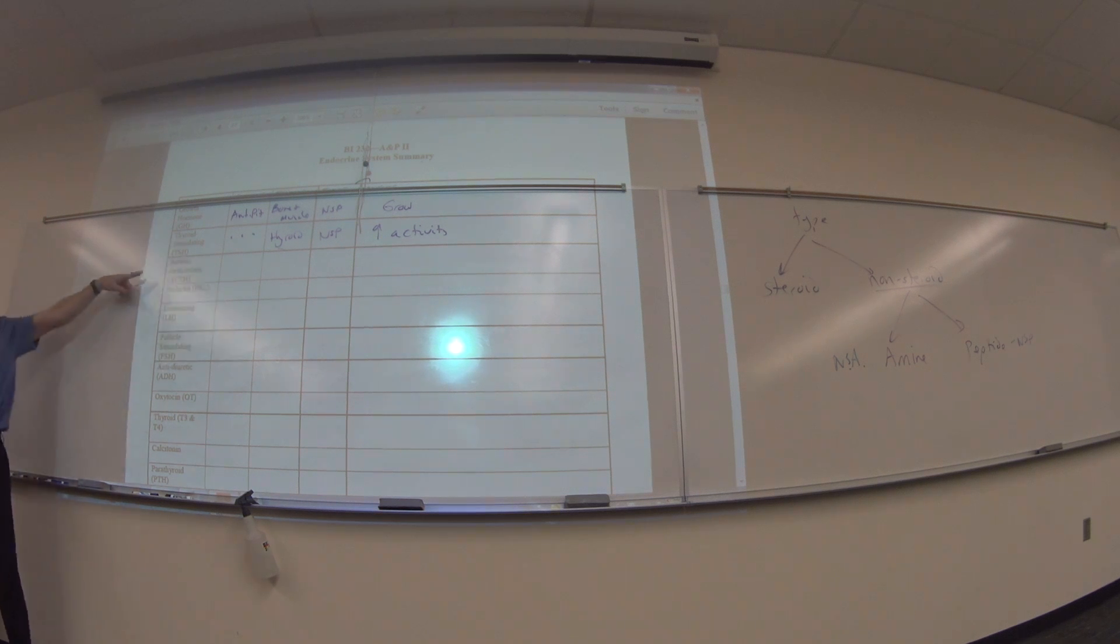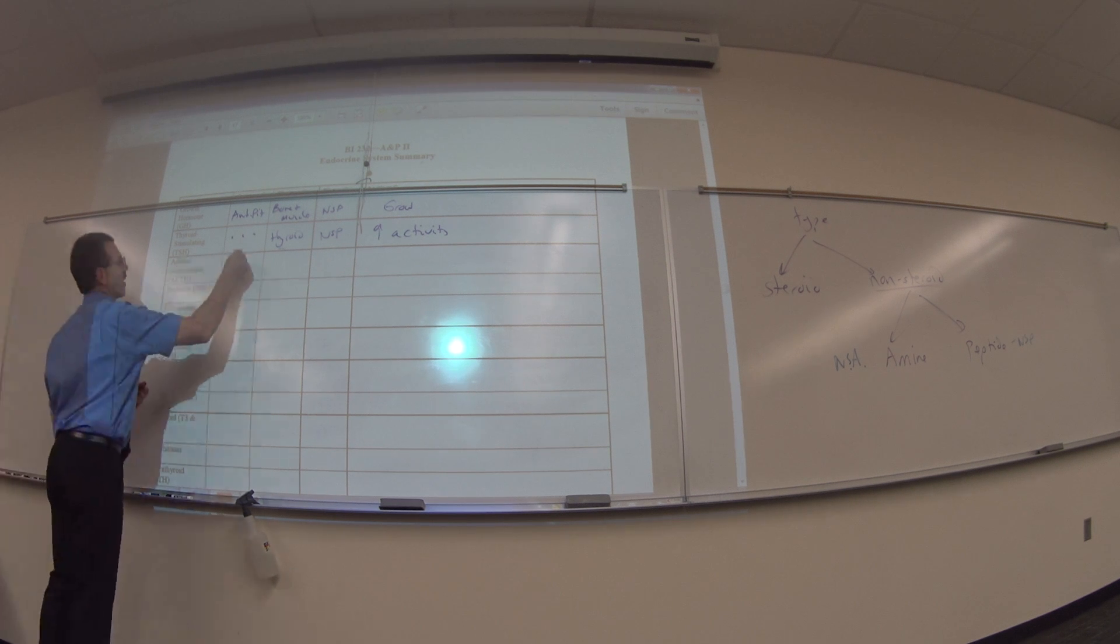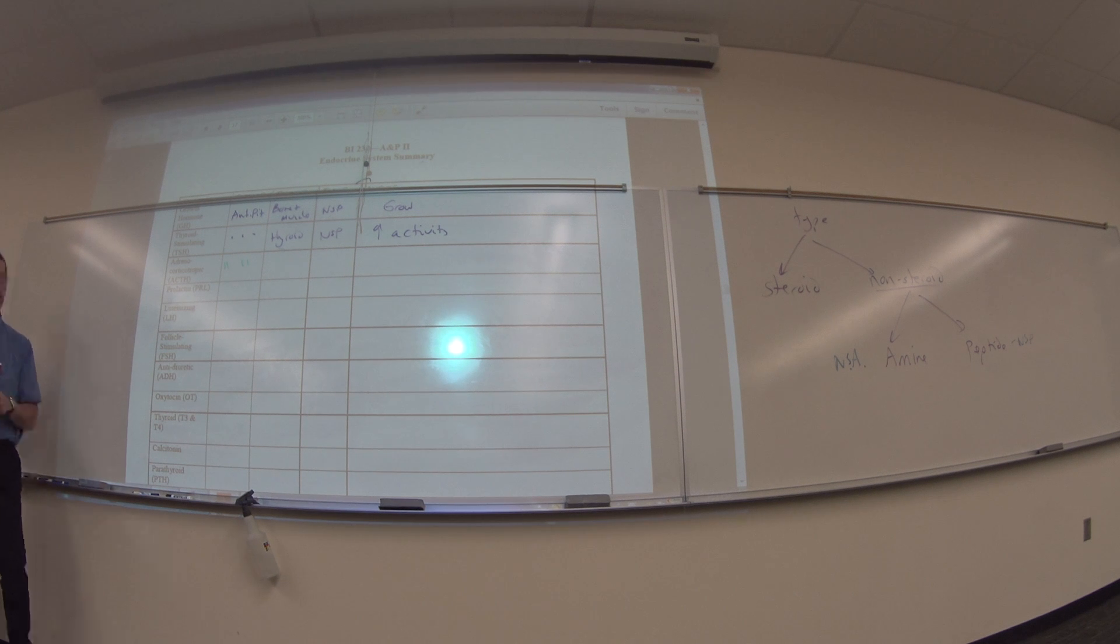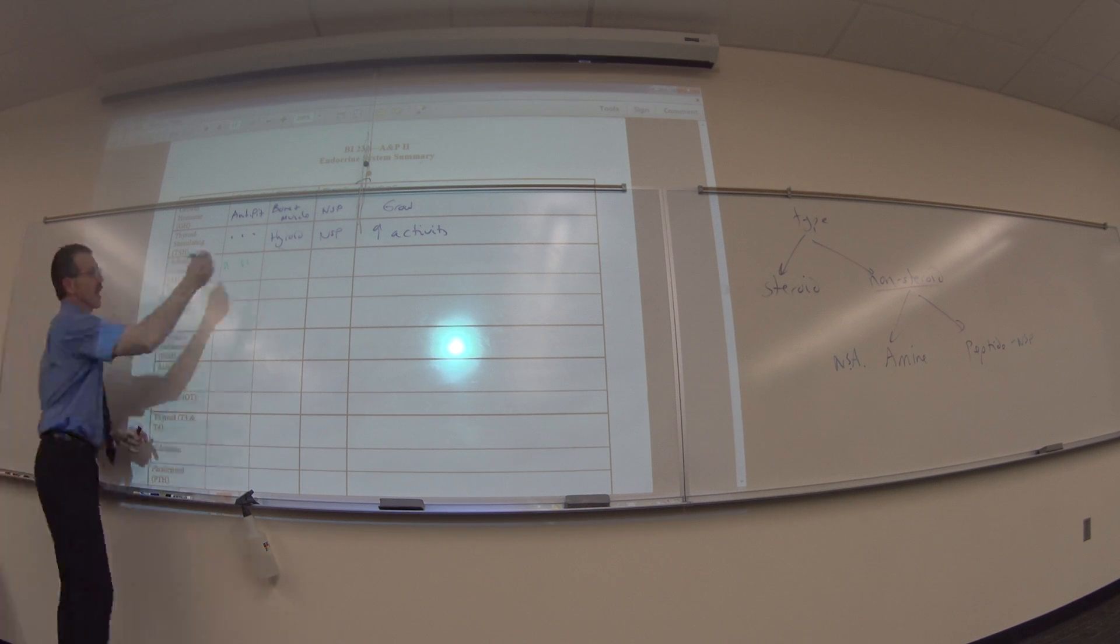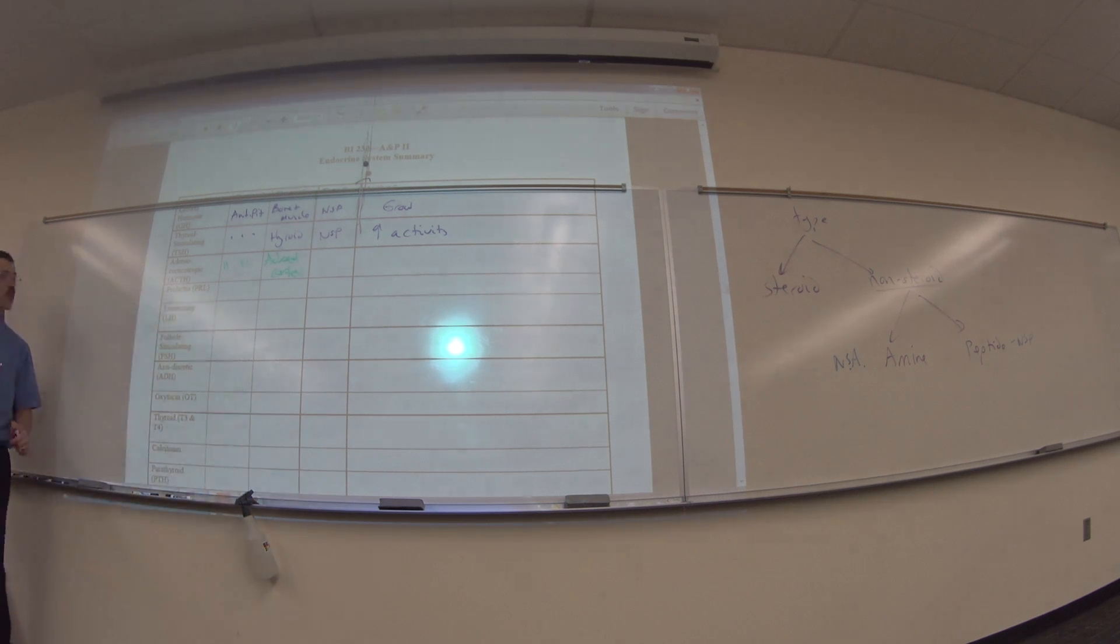Adrenal Corticotropic Hormone, also known as ACTH. Where is it made? Anterior pituitary. Where does it go? The adrenal gland. So adrenocortico means the adrenal cortex in doctor speak. The adrenal cortex, which from the lab tomorrow is the outside part of the adrenal gland.